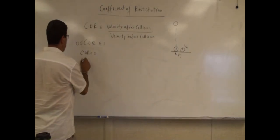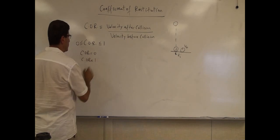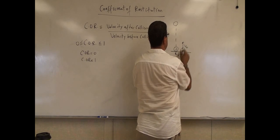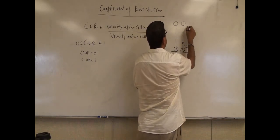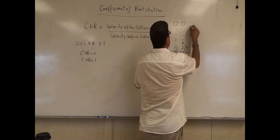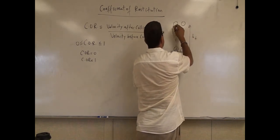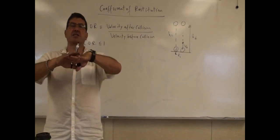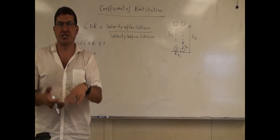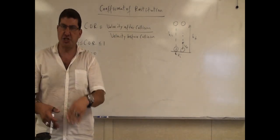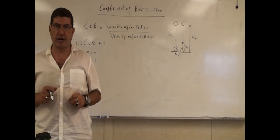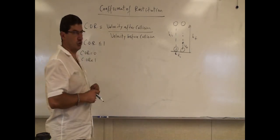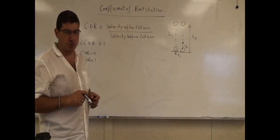If the coefficient of restitution is one, the ball would bounce back with the same velocity and go all the way to the same height — the final height equals the initial height. That means the ball experiences a perfectly elastic collision upon colliding with the ground, but that's kind of rare to find.